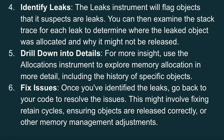To identify leaks, the Leaks Instrument will flag objects that it suspects are leaks. You can then examine the stack trace for each leak to determine where the leaked object was allocated and why it might not be released. For more insight, use the Allocations Instrument to explore memory allocation in more detail, including the history of specific objects. Once you have identified the leaks, go back to your code to resolve the issues, which might involve fixing retain cycles, ensuring objects are released correctly, or other memory management adjustments.